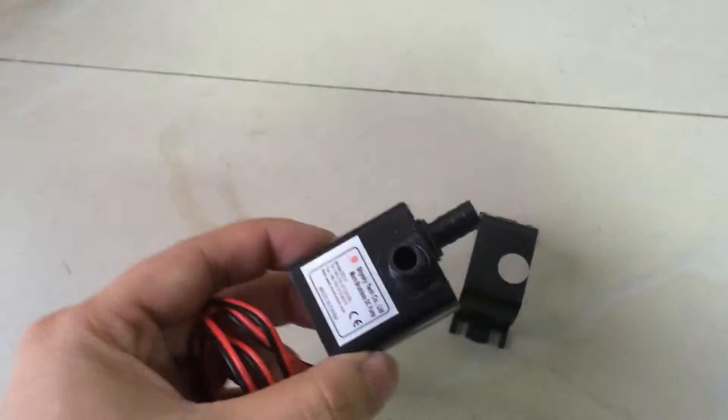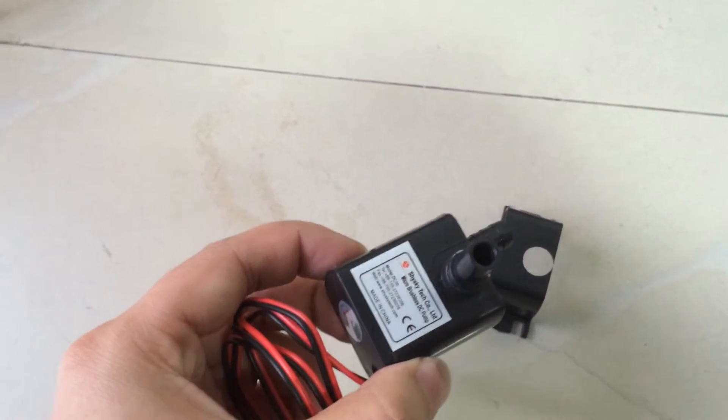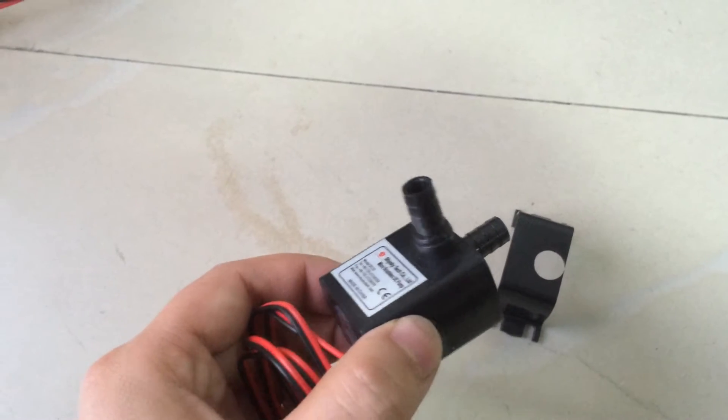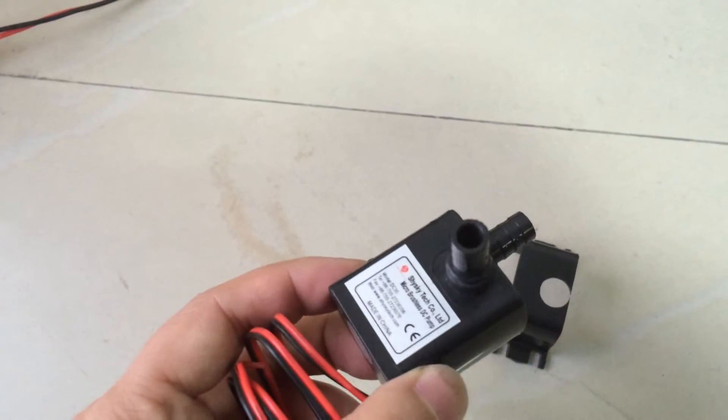This pump is rated voltage to 12 volts, and the working voltage range can be from 4.5 volts to 12 volts. Of course, lower voltage will result in lower power and lower flow.